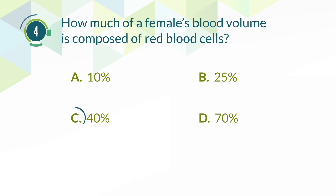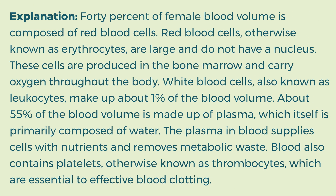The correct answer is C. Forty percent. Explanation: 40% of female blood volume is composed of red blood cells. Red blood cells, otherwise known as erythrocytes, are large and do not have a nucleus. These cells are produced in the bone marrow and carry oxygen throughout the body. White blood cells, also known as leukocytes, make up about one percent of the blood volume. About 55 percent of the blood volume is made up of plasma, which itself is primarily composed of water.